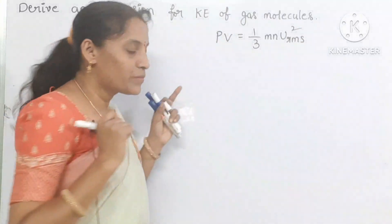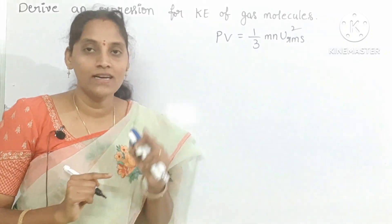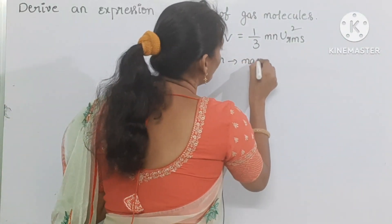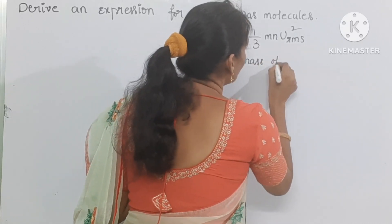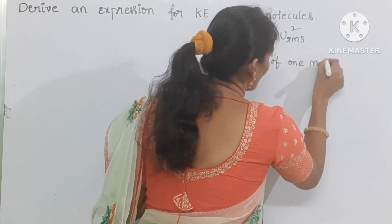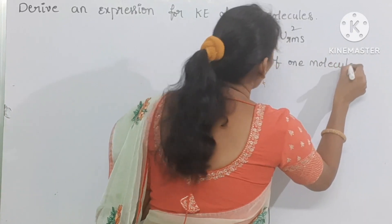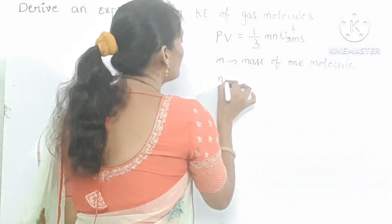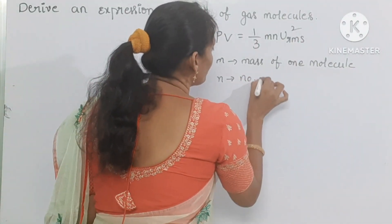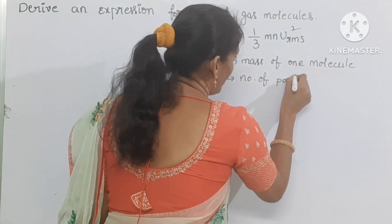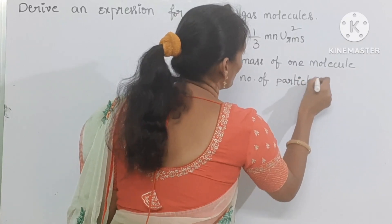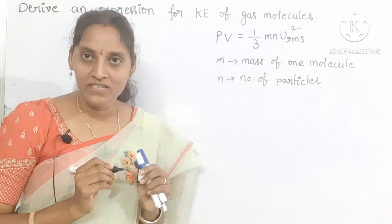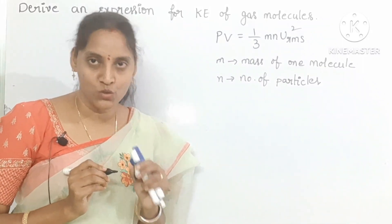Here P is the pressure of a gas, V is the volume of a gas. M is the mass of one molecule. N is the number of particles. U is the velocity of a gas, and RMS is nothing but root mean square.